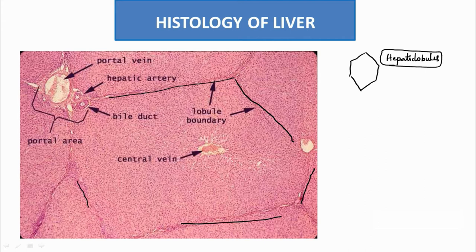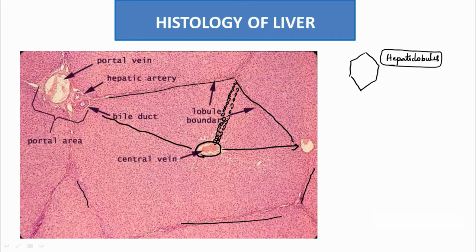What is a hepatic lobule? The structural unit of the liver is a hepatic lobule. It is made of hepatic cells arranged in a chord-like manner. You can see their arrangement — they are radiating from a central structure to the peripheral structure.